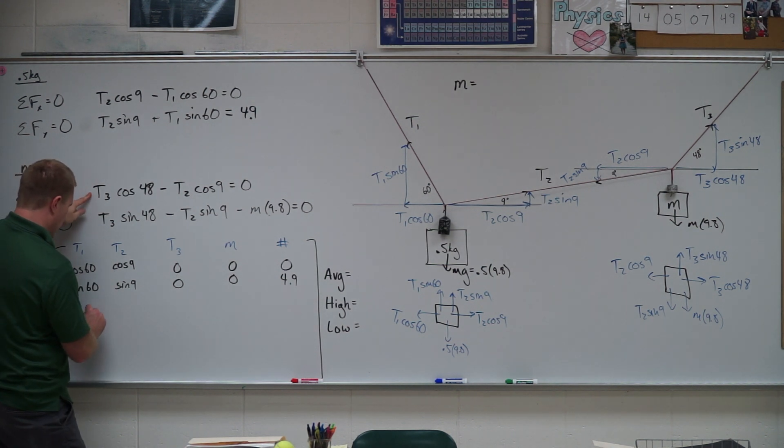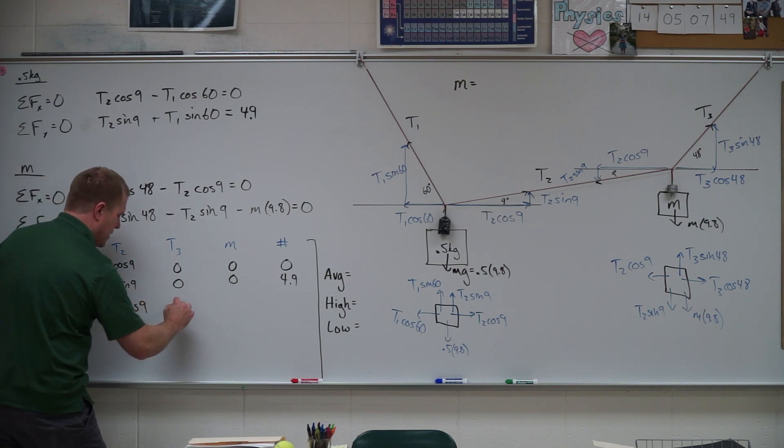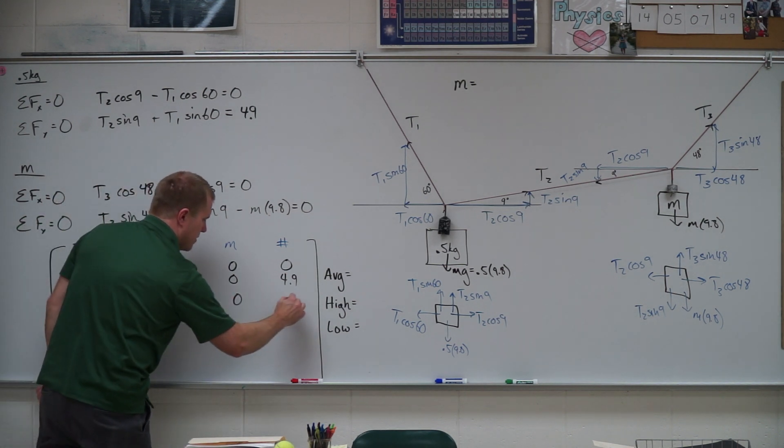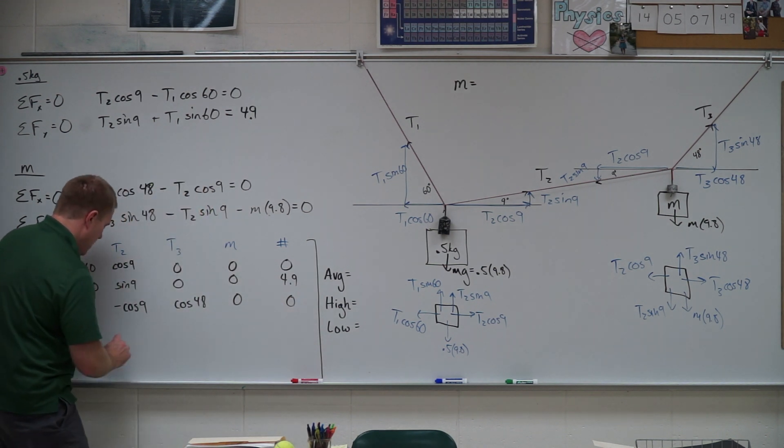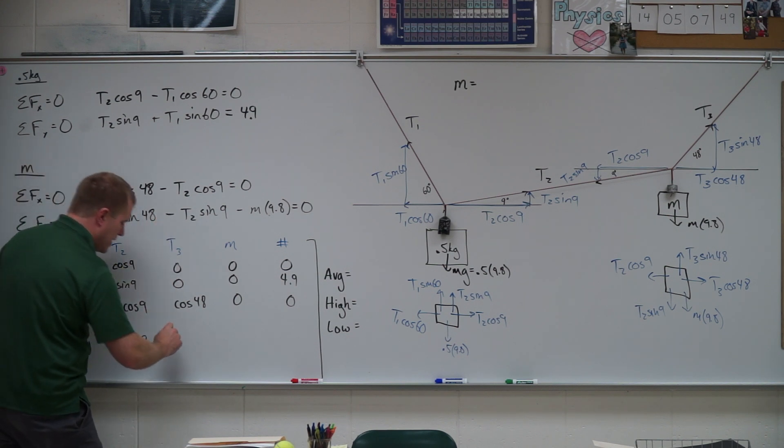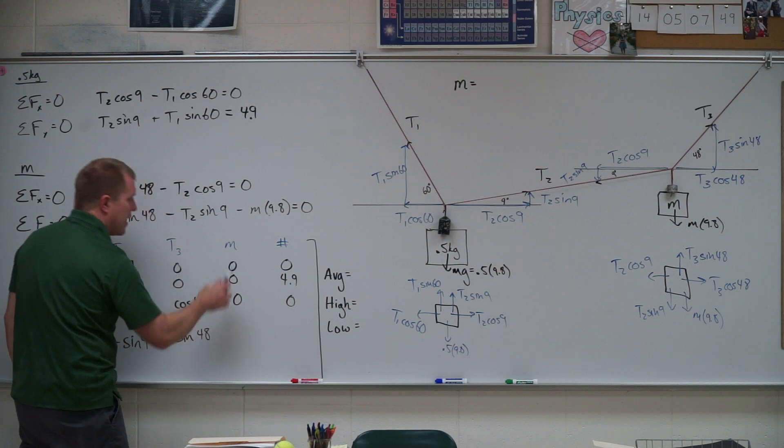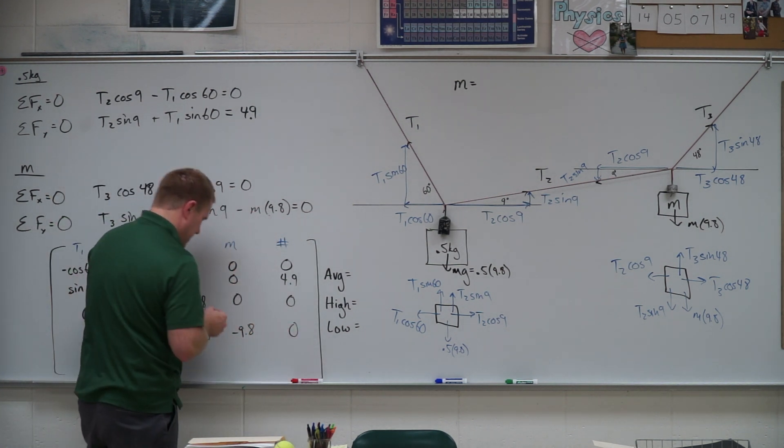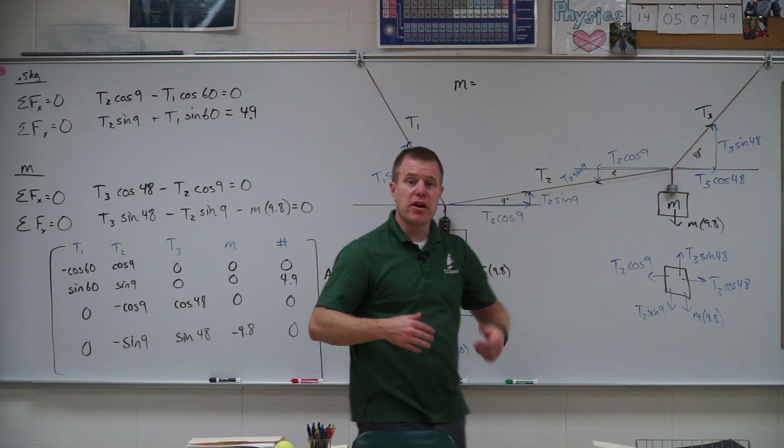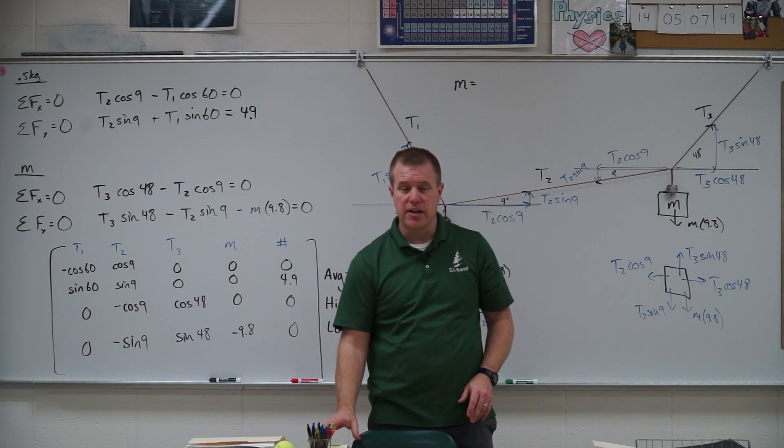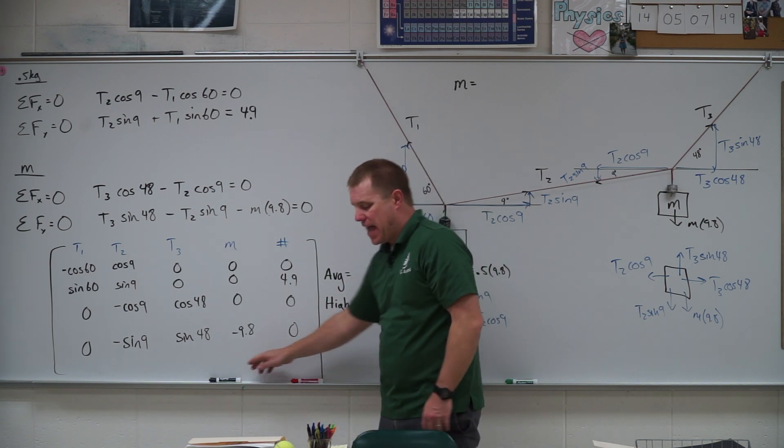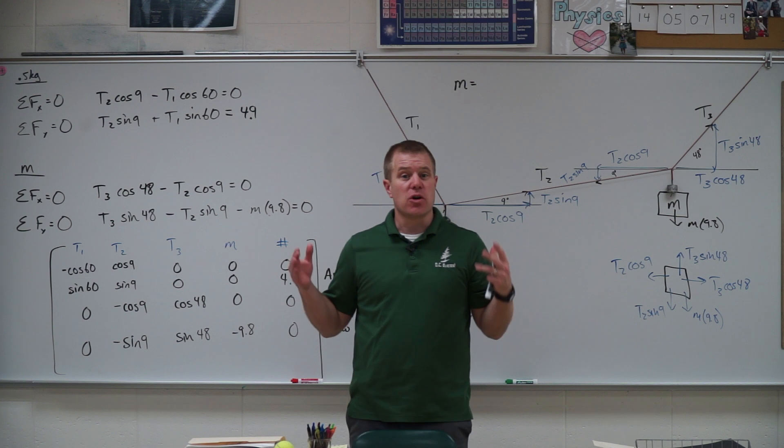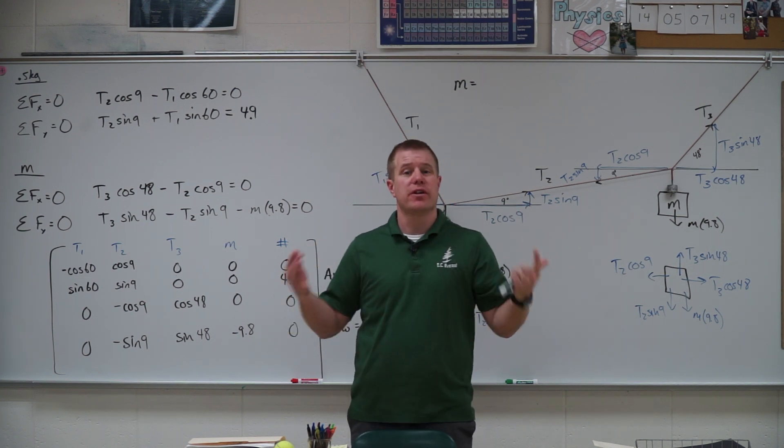Next equation, there is no T1 term, so I got a 0 there, and then T2 is negative cosine of 9. And I have cosine of 48, 0, 0. I have the negative sine of 9 because it's pointing down. It has that negative sign with it. And then I have the sine of 48. And then m is multiplied by negative 9.8 equals 0. So we're going to go ahead, and we are going to plug these numbers in on our calculator, and we're going to figure out what is that mass. So we're going to take a quick second here, and I'm going to bring you into that calculator view, and we're going to take a look at that.